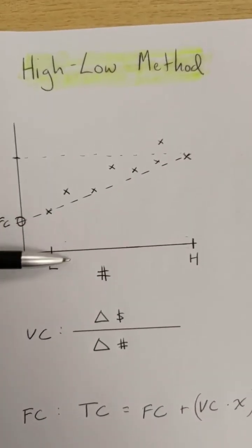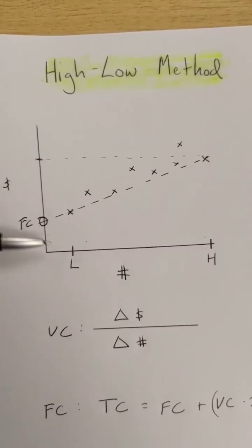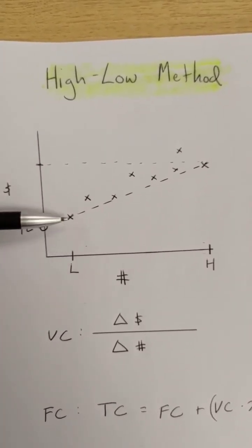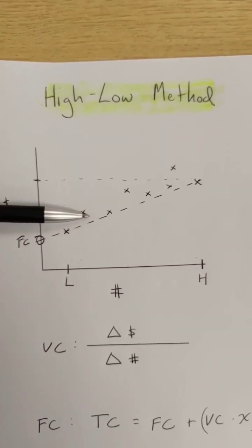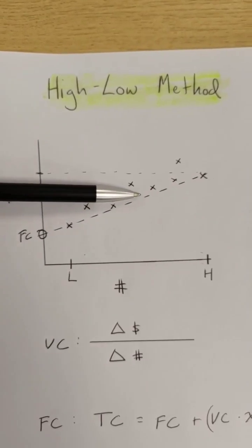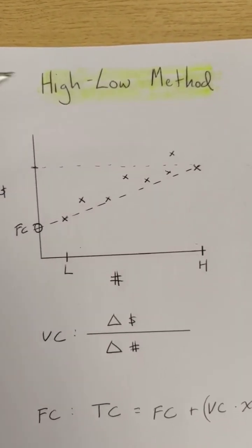So I plot my activity level on the x-axis of a graph, and then I plot the corresponding total cost, and we see roughly positive correlation. The greater number of units I produce, the higher my costs.